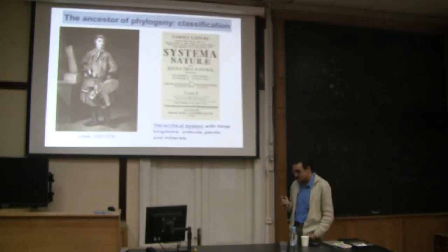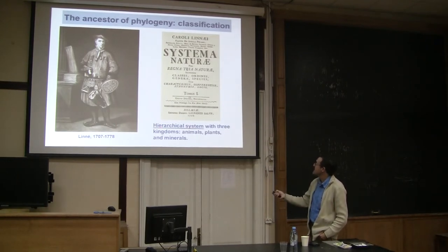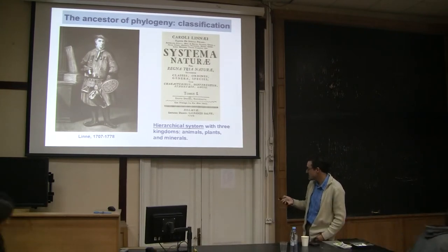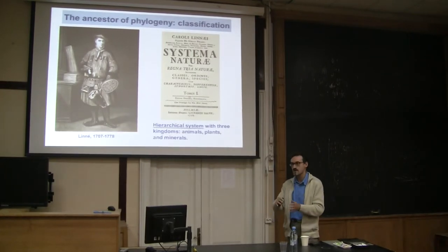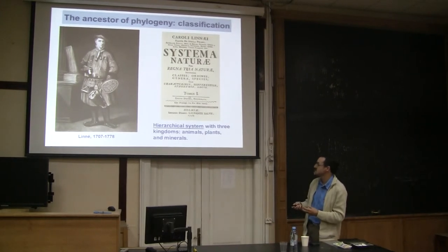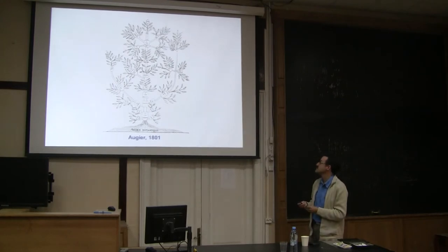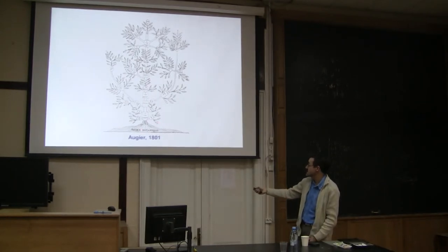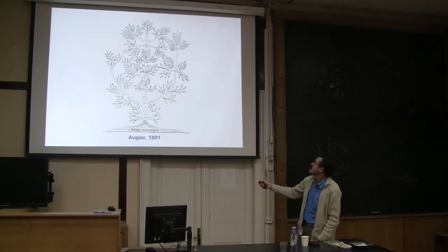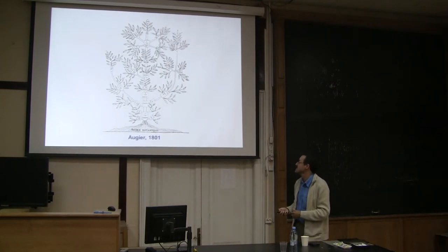What is important is that Linné proposed a hierarchical system to classify all living beings within three groups. These major groups were divided into smaller and smaller groups, forming a hierarchy that at the end joined all living beings. This type of classification was very easy to represent as a tree — one of the first such trees published — but it was not yet a phylogenetic tree. This was just a classification, and phylogeny came a little bit later.